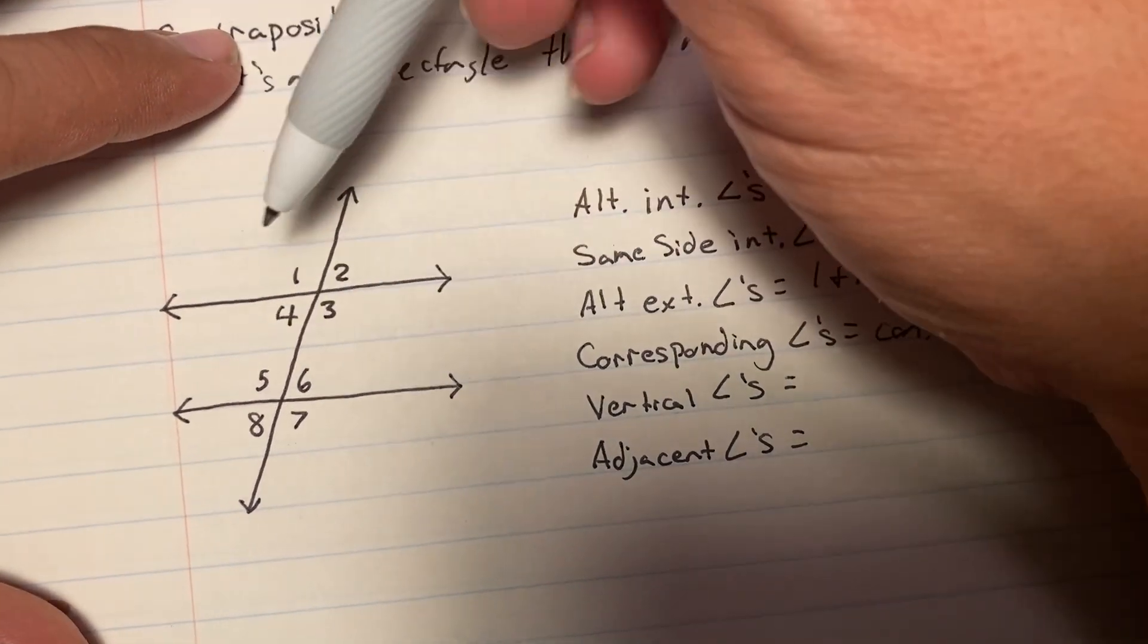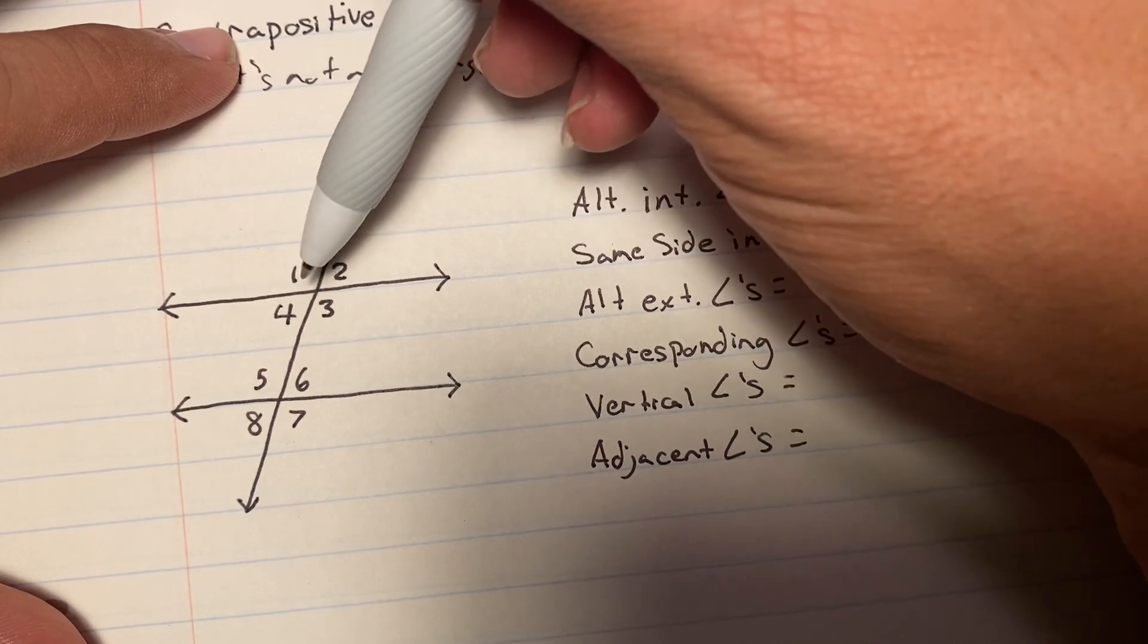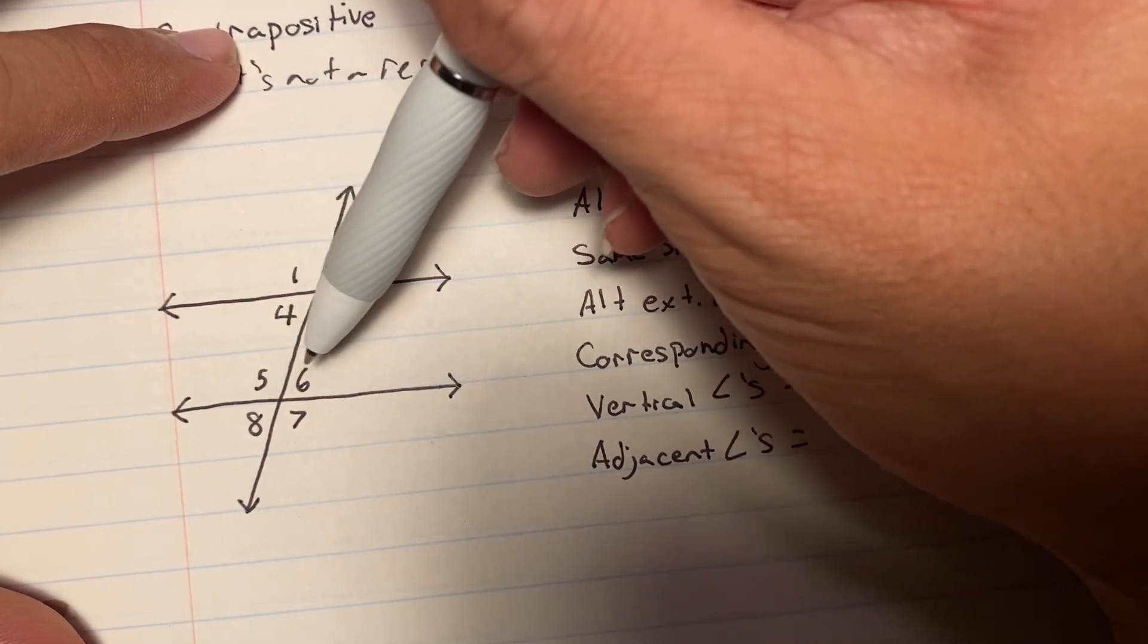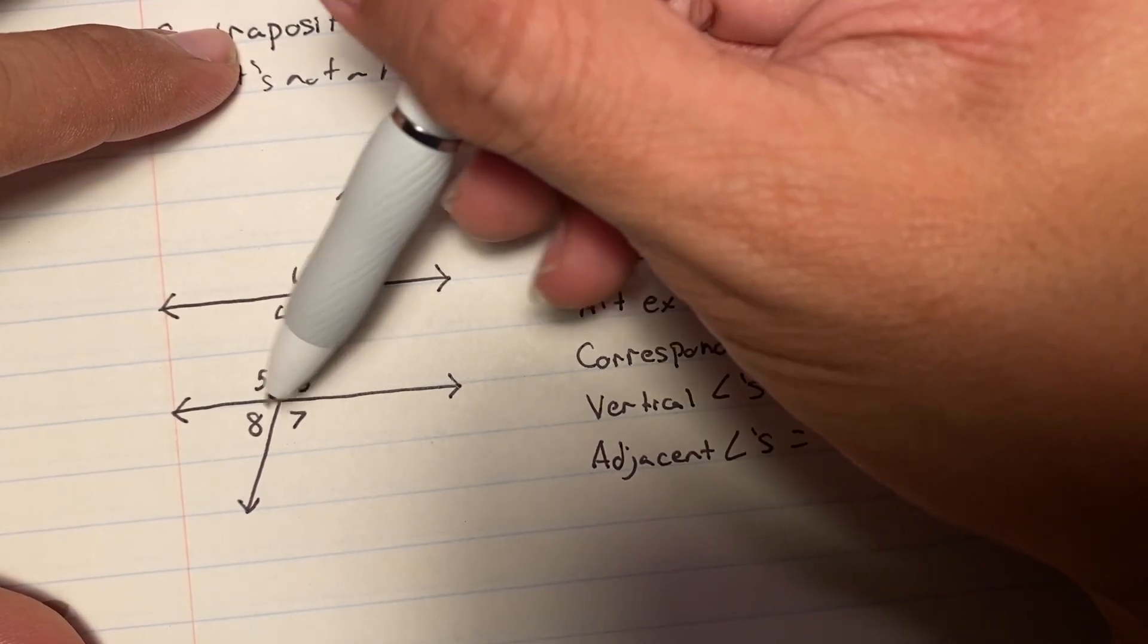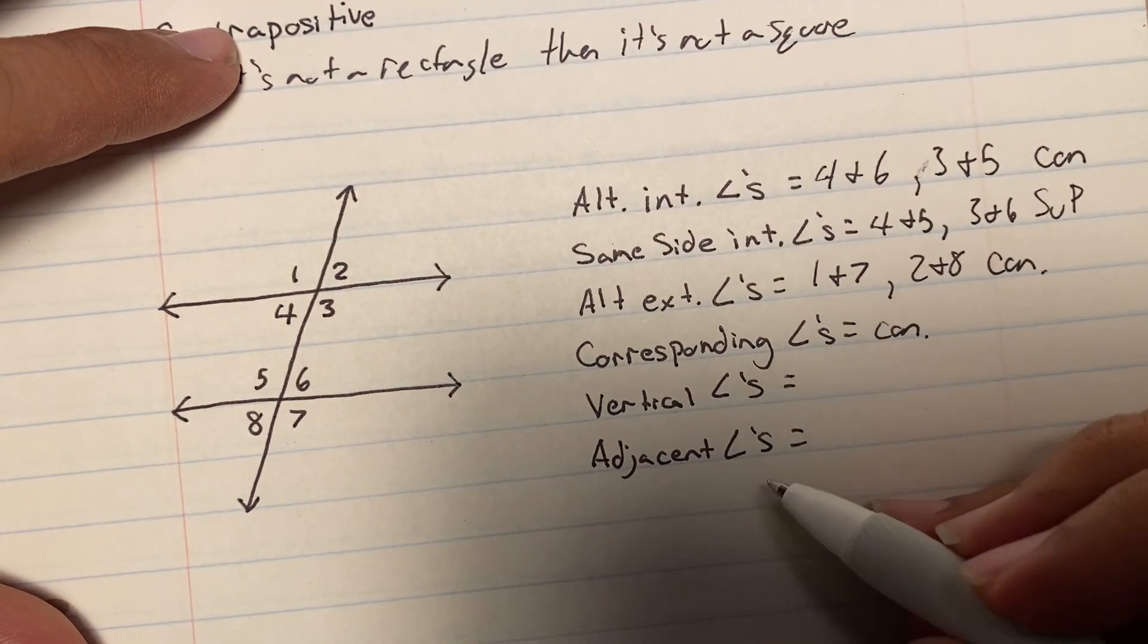Adjacent angles are angles that are next to each other. So, 1, 2, 2, 3, 3, 4, 4, 1. Or, 5, 6, 6, 7, 7, 8, 8, 5. So, those are adjacent angles.